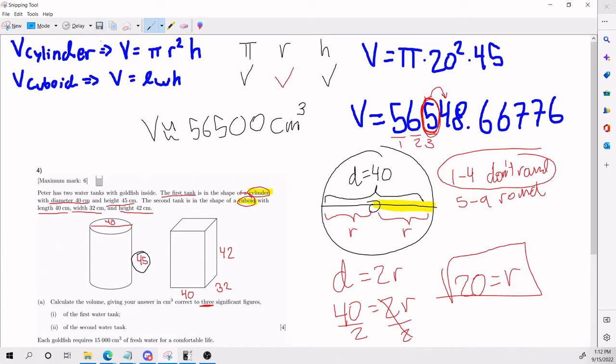Part A, part double I is with this formula here. We need to do the same process. Always be organized. This time, they are asking for length, width, and height. So go one by one. Do we have the length? It's right here. Do we have the width? It's right here. Do we have the height? It's right here. Let's plug in.